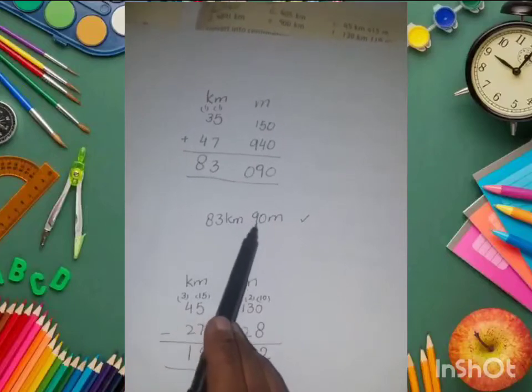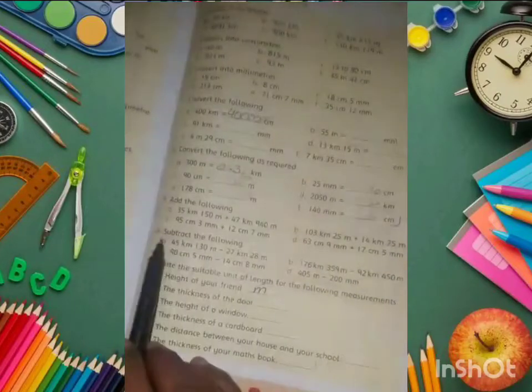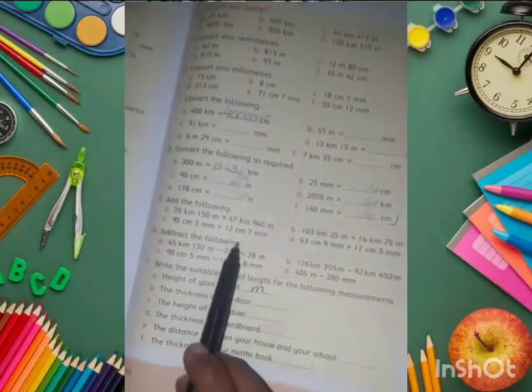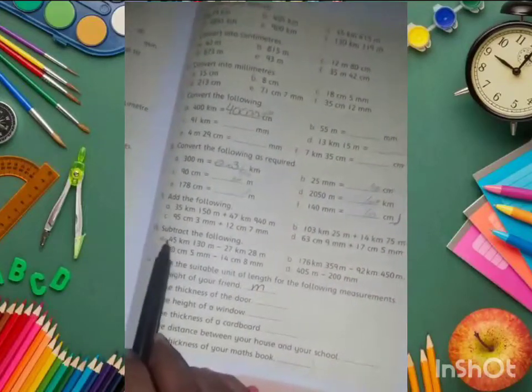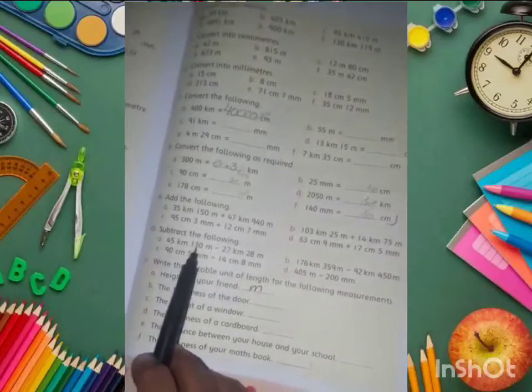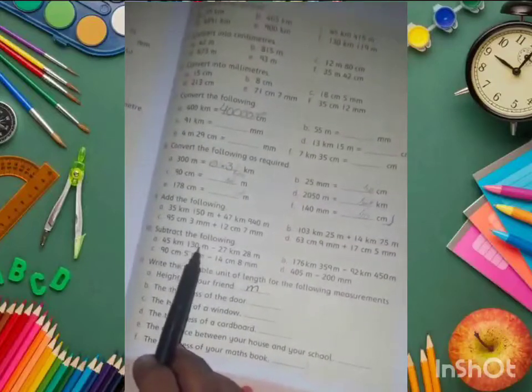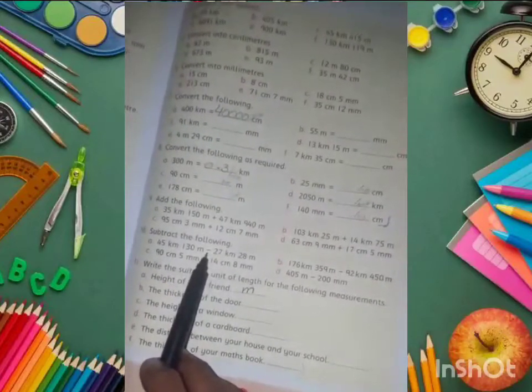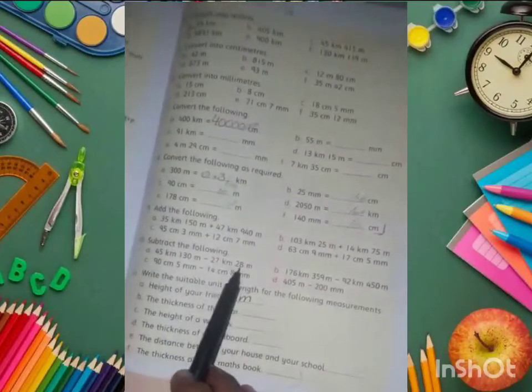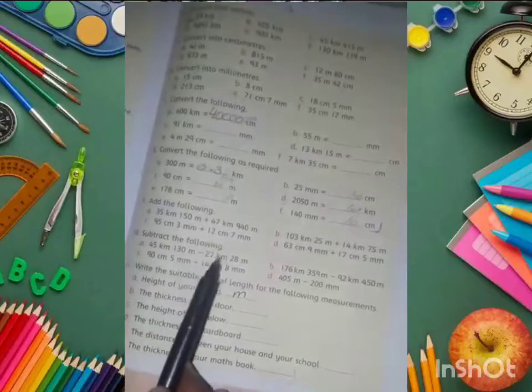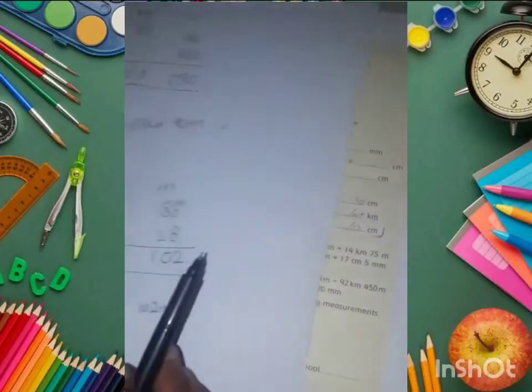Question 10 is subtraction. Let's subtract these questions. Question A: 45 kilometers 130 meters minus 27 kilometers 28 meters.